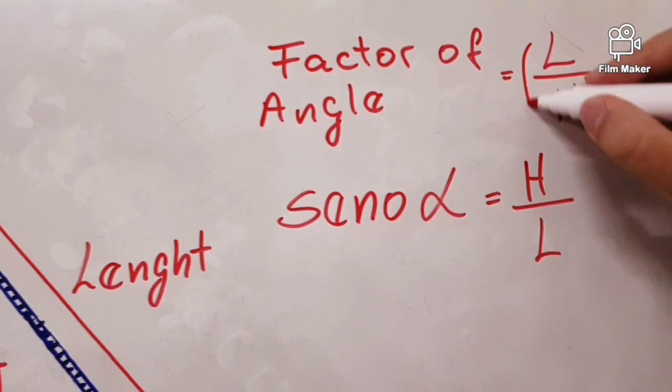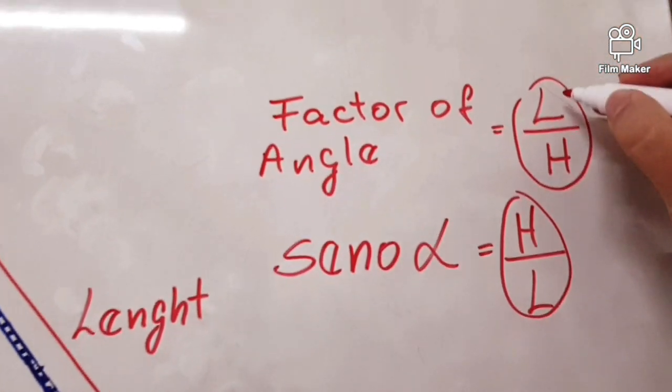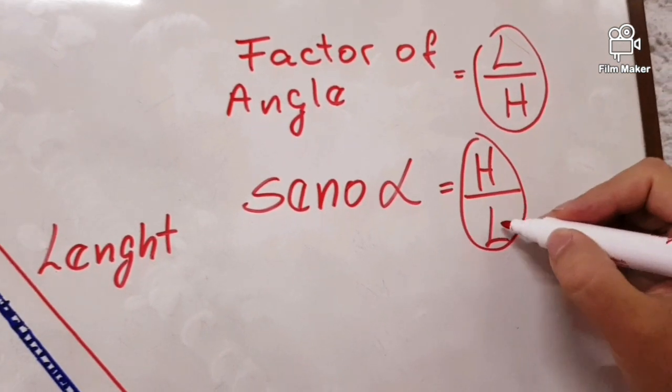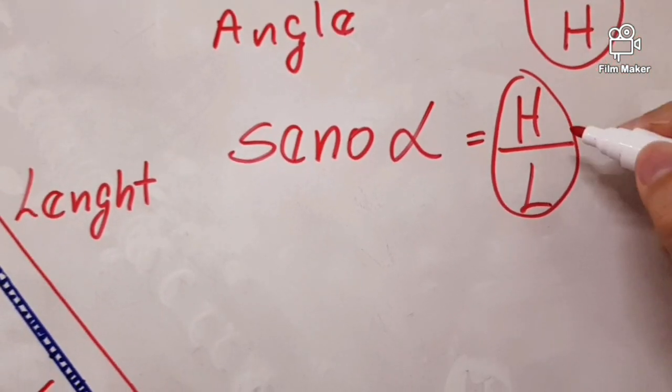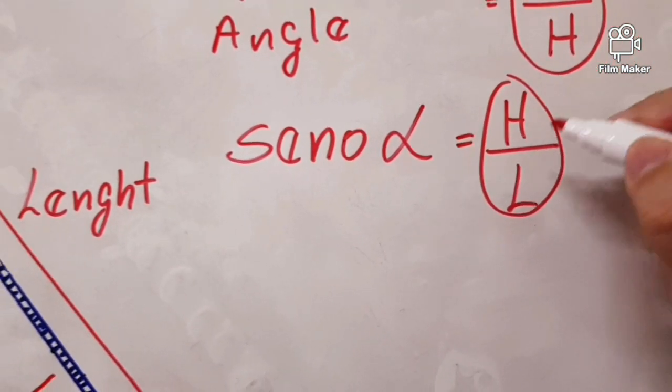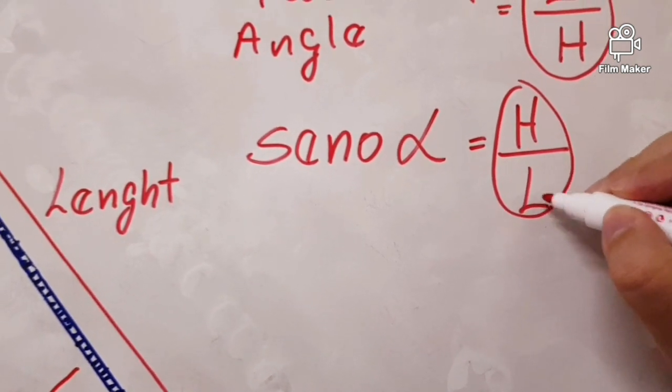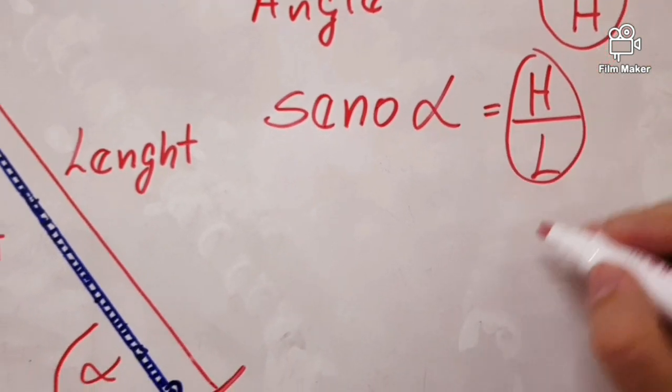We have now similar expressions here: length divided by the height and height divided by the length. What can we do now? I think we can change the positions of this. The L goes up and the H goes below, like this.